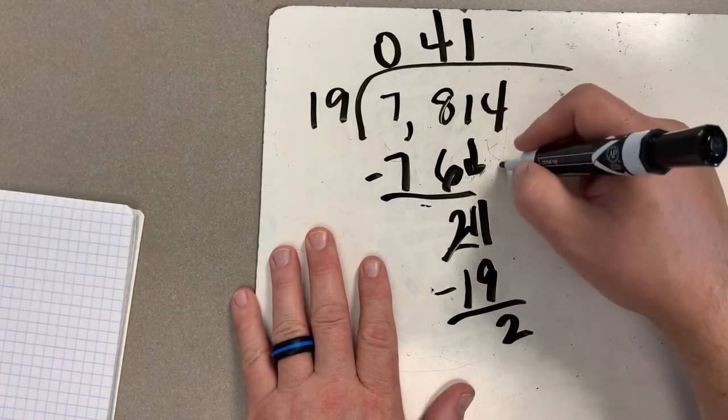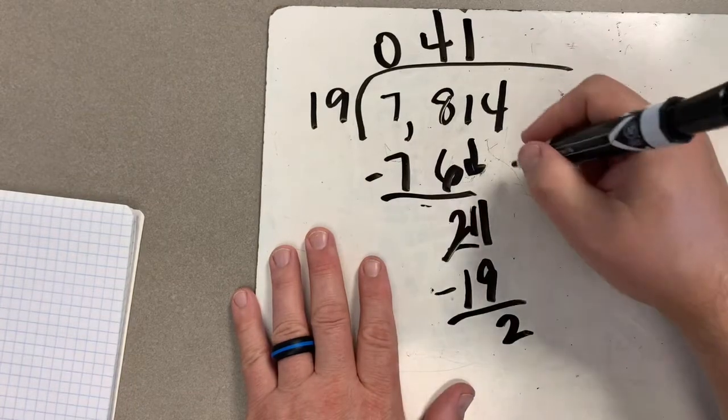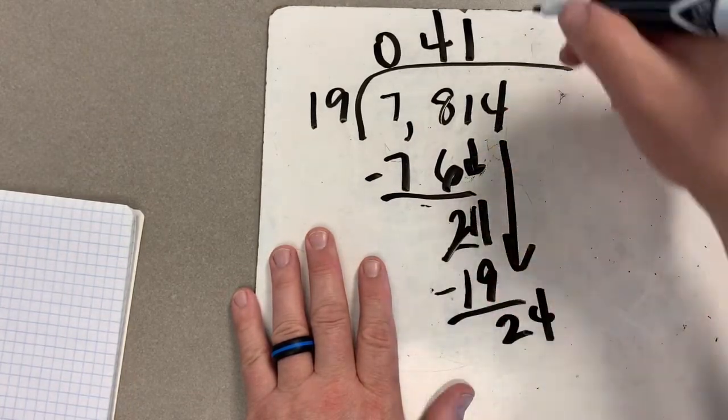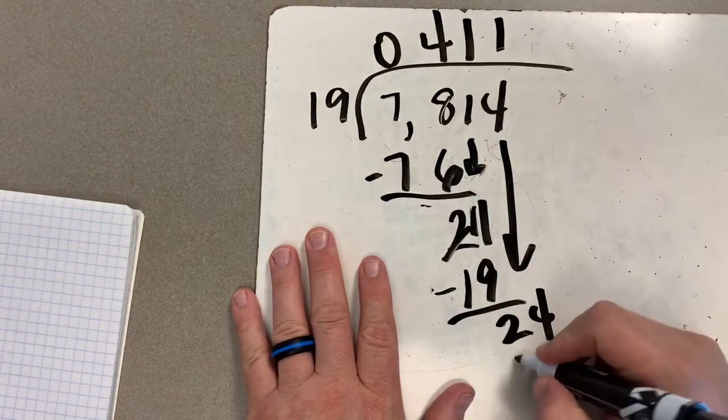I've got two left over. Again, it's less than my 19, so I can drop my next digit. I have 24. And again, only one time.